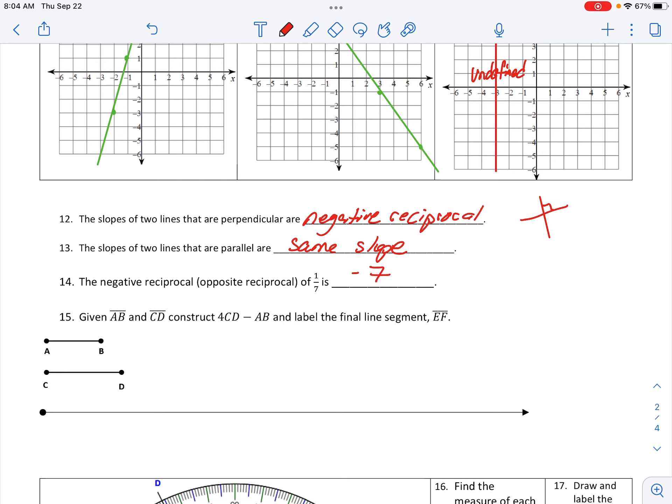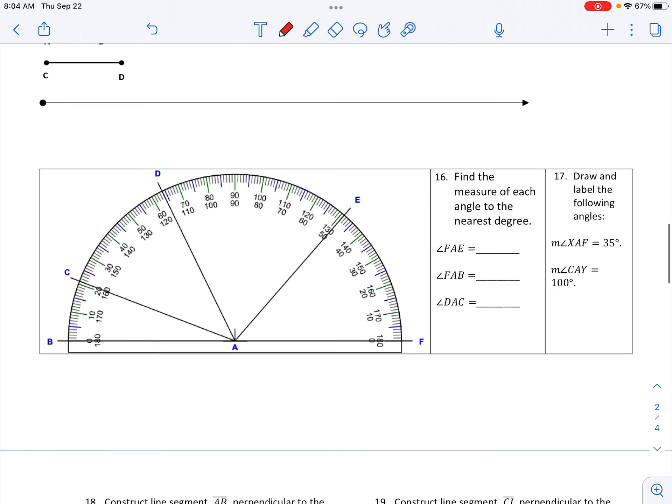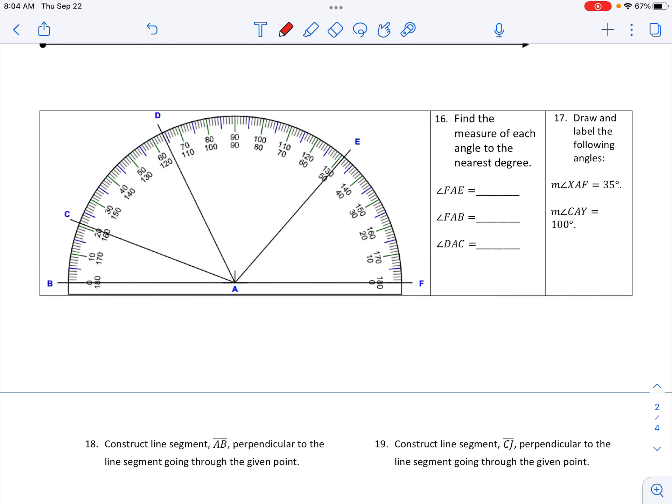The negative reciprocal of one-seventh is negative seven—change it and flip it. Fifteen I'll come back to. Sixteen: traced out F-A-E, so we're starting off at zero and it looks like it's acute, so we're right at 49 degrees.